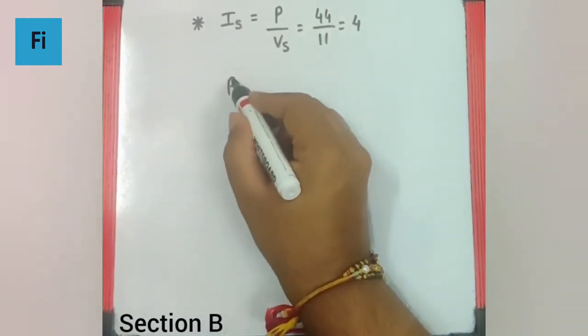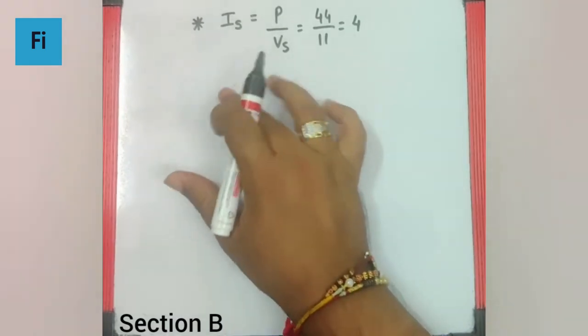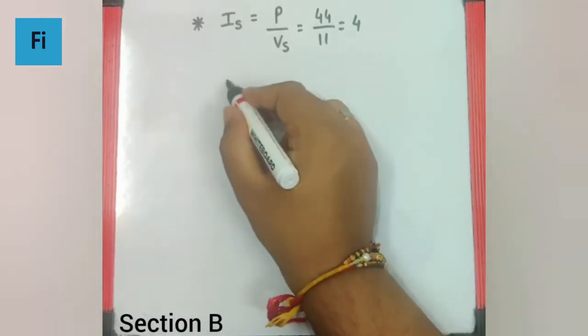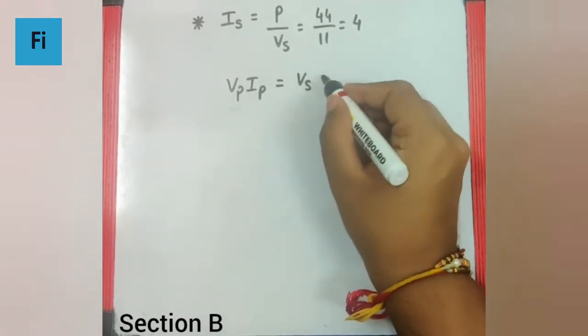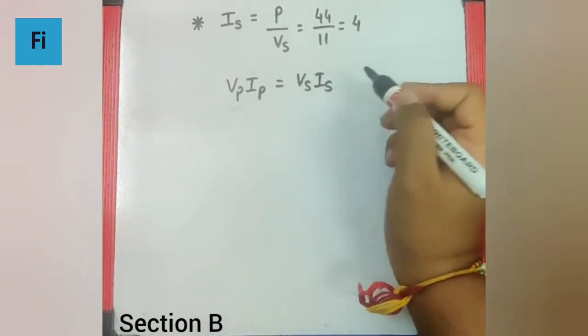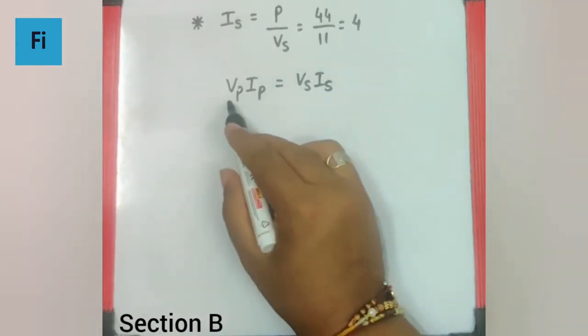Now I can say the power has to be common so definitely V in the primary circuit times current in the primary circuit is equal to V in the secondary circuit times I in the secondary circuit.